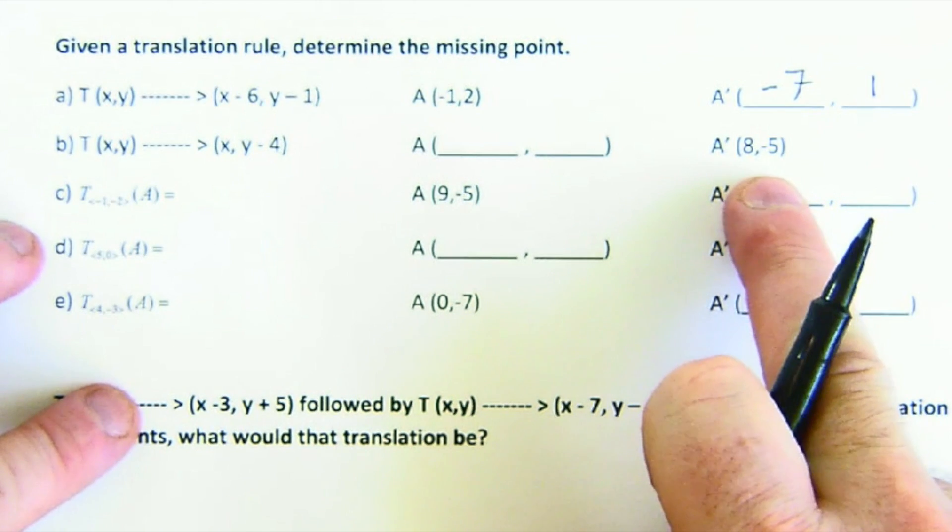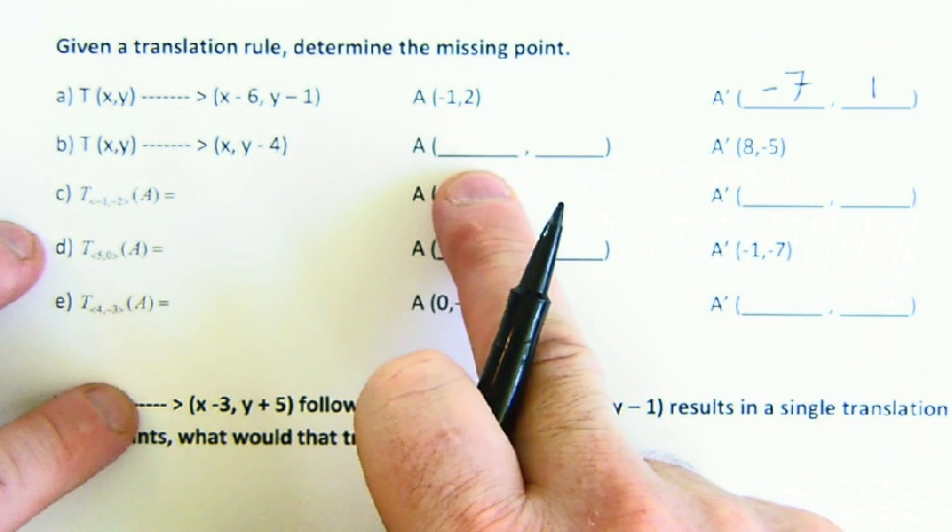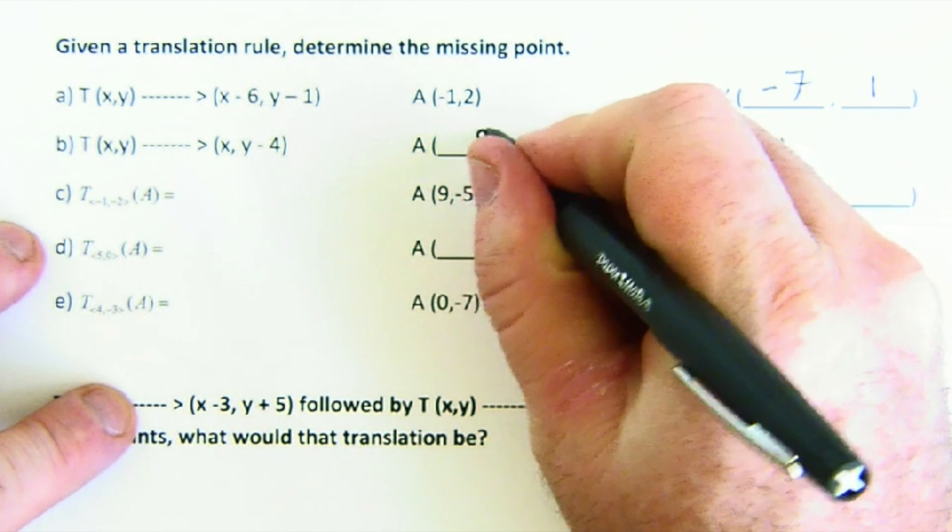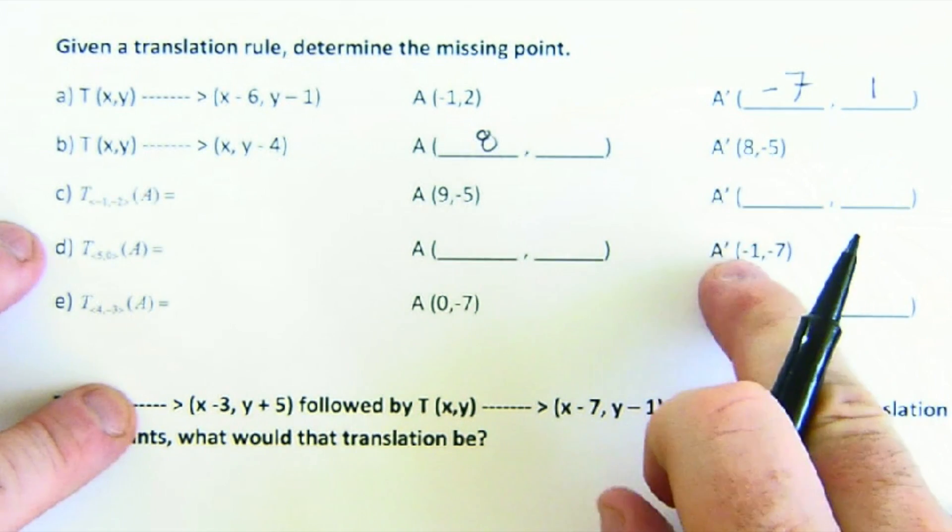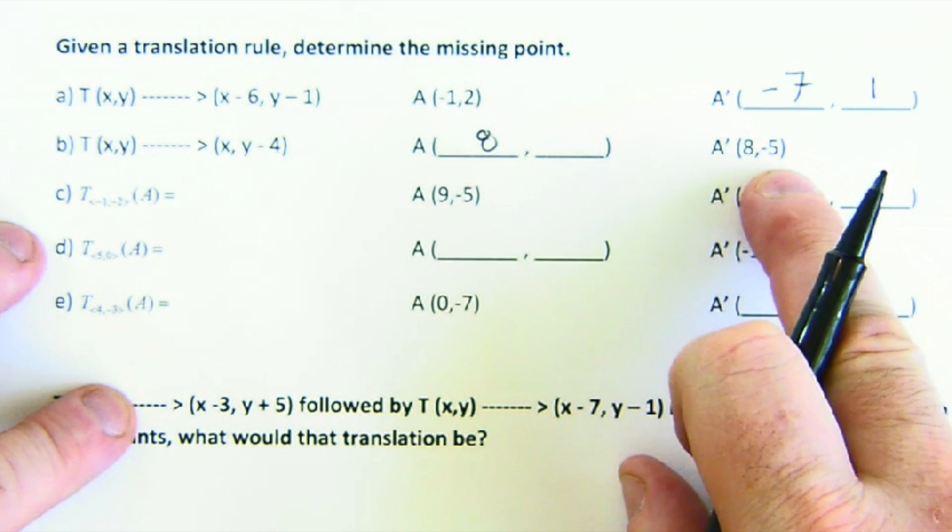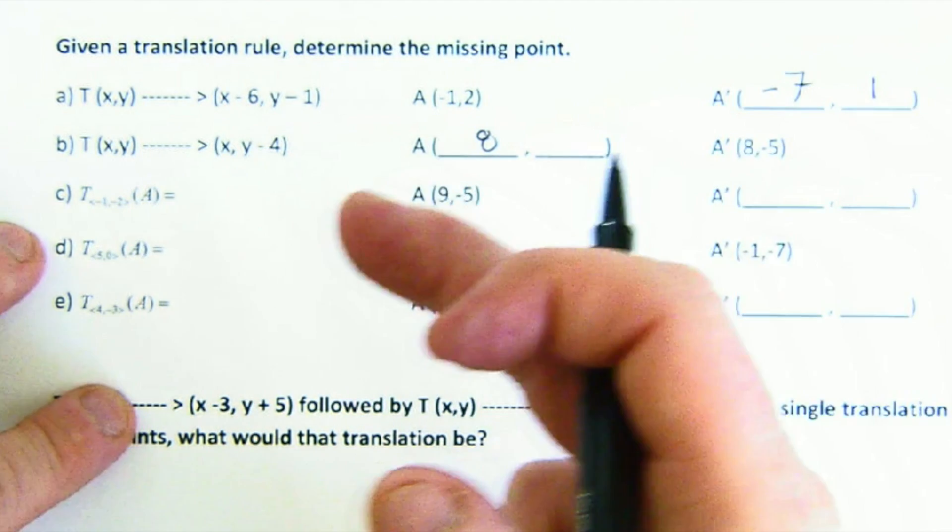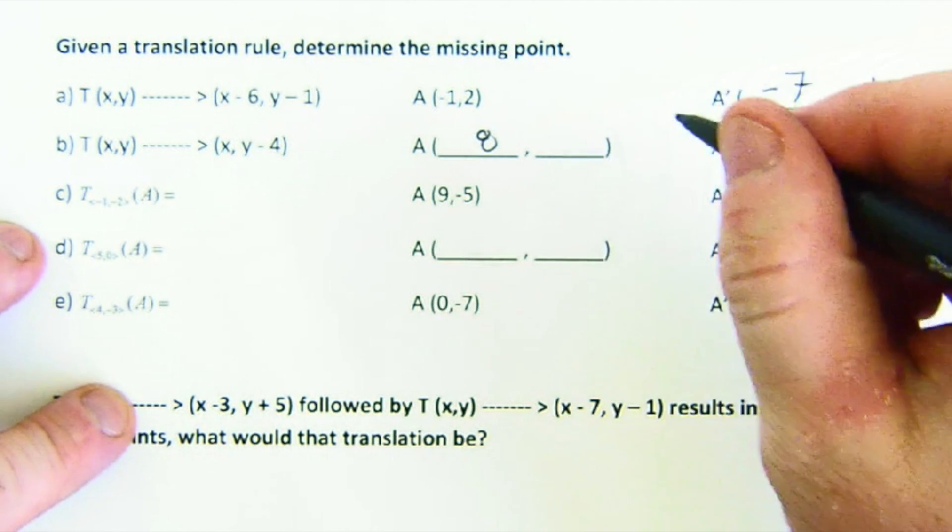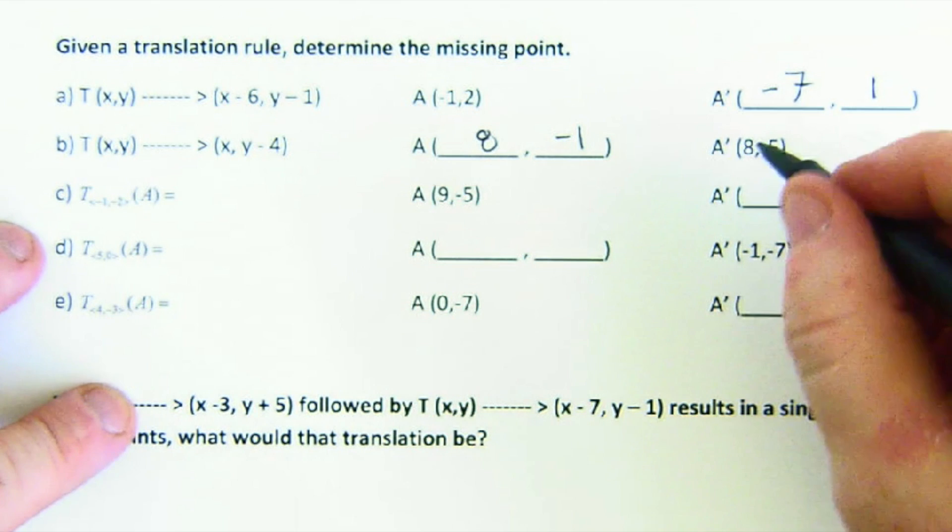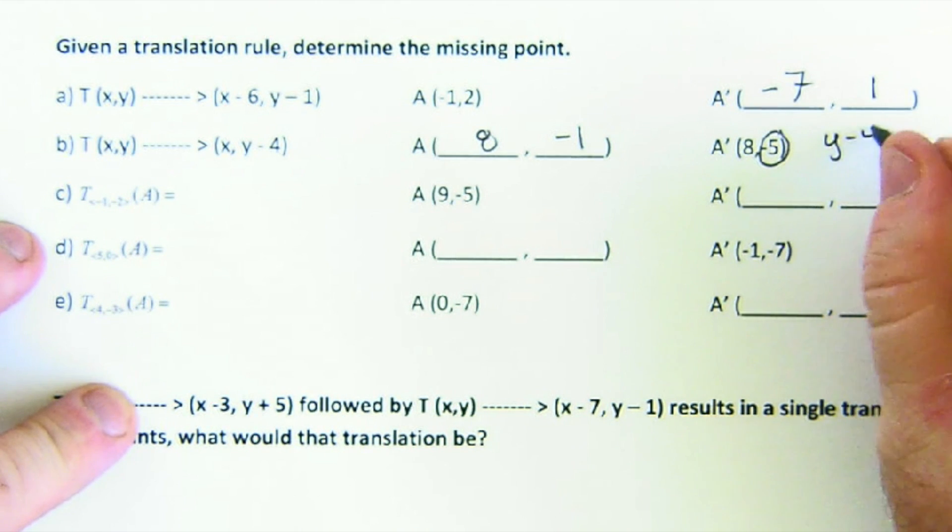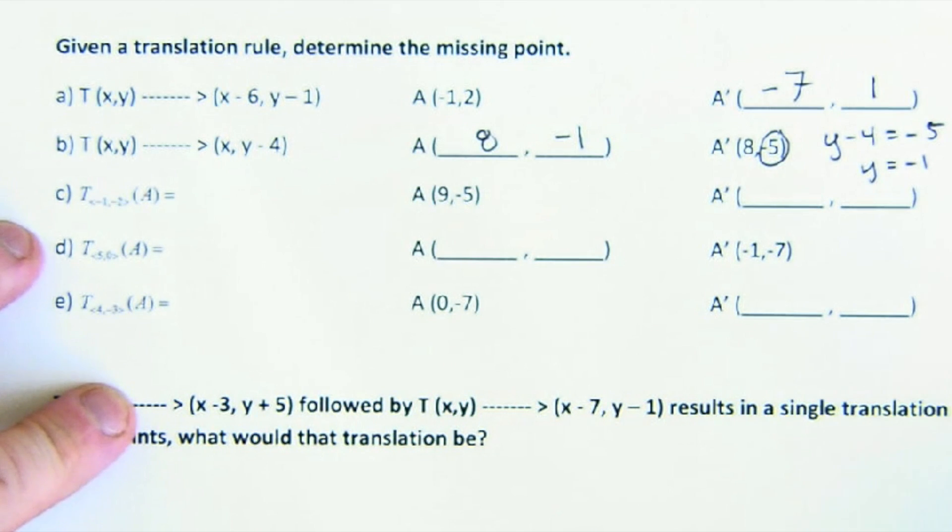Ooh, this is cool. I have the image. I want the pre-image. So if I'm at 8, I must have started at 8 because x didn't change. If I'm at negative 5, I went negative 4 to get there. So I'd actually go add 4 to go back. And so I would be at negative 1. If that was too quick, what you can do, we covered this in an earlier objective. You can just say, y minus 4 came out to be negative 5. And solve that little problem, and you find out what it was to make it end up at negative 5.